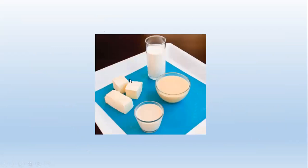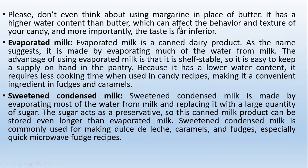Here are the dairy products: butter, cream, and concentrated milk. Please do not use margarine in place of butter — it has a higher water content, which can affect the behavior and texture of your candy, and the taste is far inferior. Evaporated milk is a canned dairy product made by evaporating much of the water from milk, and it can be used in candy products. Sweetened condensed milk can also be used in candy production for caramel, fudges, and many other recipes.